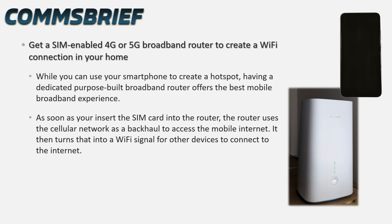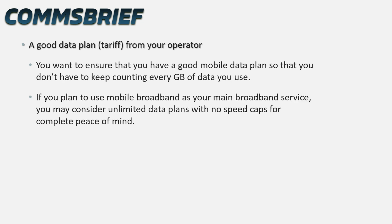The next step is to get a SIM-enabled 4G or 5G broadband router to create a Wi-Fi connection in your home. While you can use your smartphone as a hotspot, a dedicated purpose-built broadband router offers the best mobile broadband experience. Once you insert the SIM card, the router uses the mobile network as a backhaul to access the internet and turns that into a Wi-Fi signal for other devices. Finally, you also need a good mobile data plan so you don't have to keep counting every megabyte or gigabyte. If you plan to use mobile broadband as your main service, consider unlimited data plans with no speed caps.